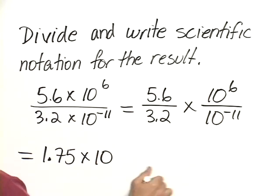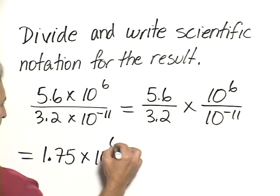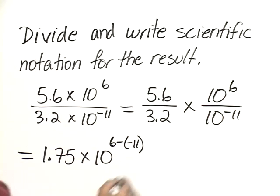Times 10. Remember that when we are dividing exponential expressions with the same base, we subtract the exponents. So, 6 minus a negative 11.